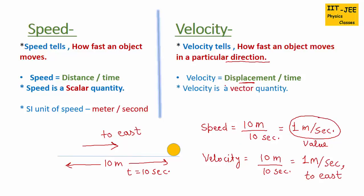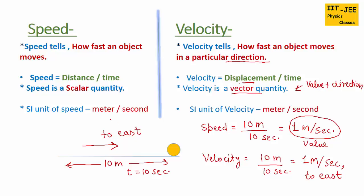That's why velocity is a vector quantity — it includes both value and direction. Speed and velocity share the same SI unit, which is meter per second.